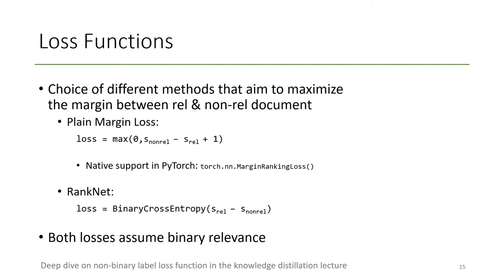For the loss, we also have multiple choices. In practice, the choice of binary relevance loss is usually not very critical. We can use a plain margin loss — called margin ranking loss in PyTorch — which just pushes the two scores from the relevant and non-relevant document away from each other without any activation or transformation. We can also use the so-called RankNet loss, which uses a binary cross-entropy on the margin of the two scores. Both losses assume binary relevance. A deep dive on non-binary loss functions comes in the knowledge distillation lecture.